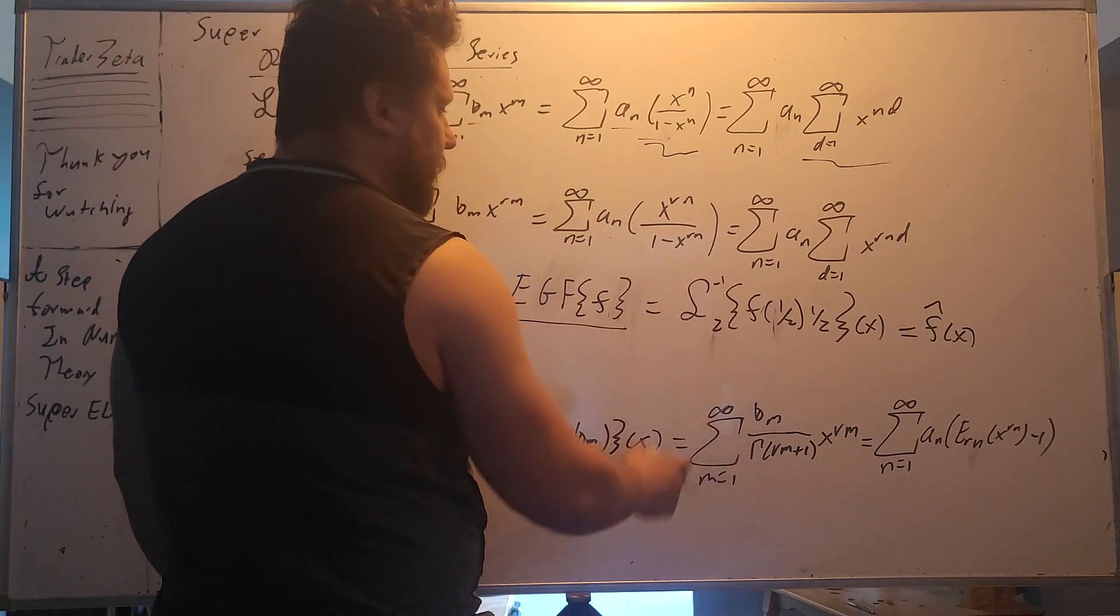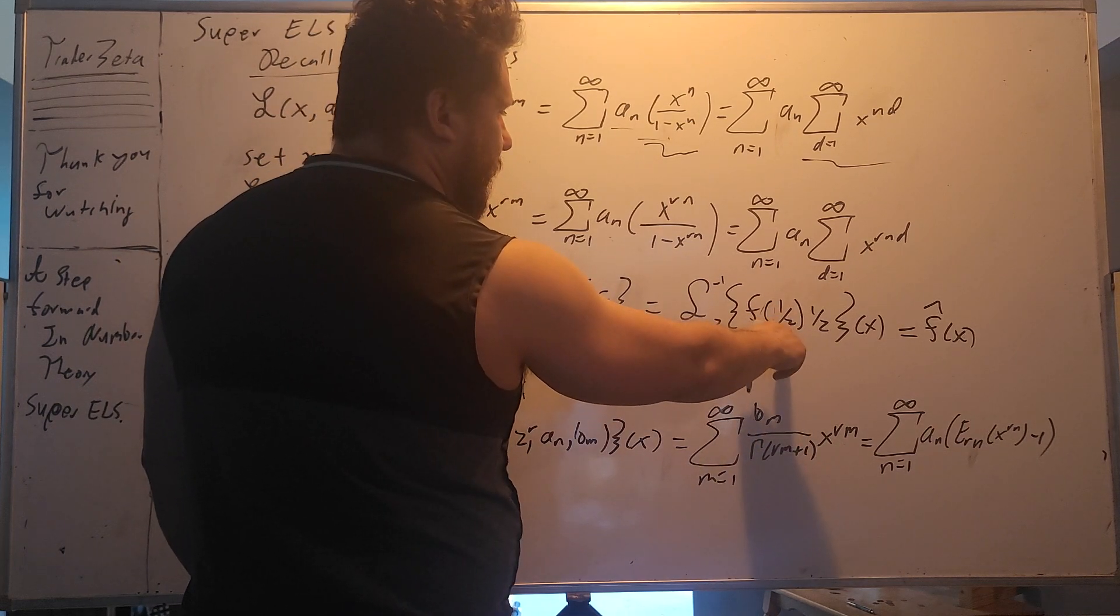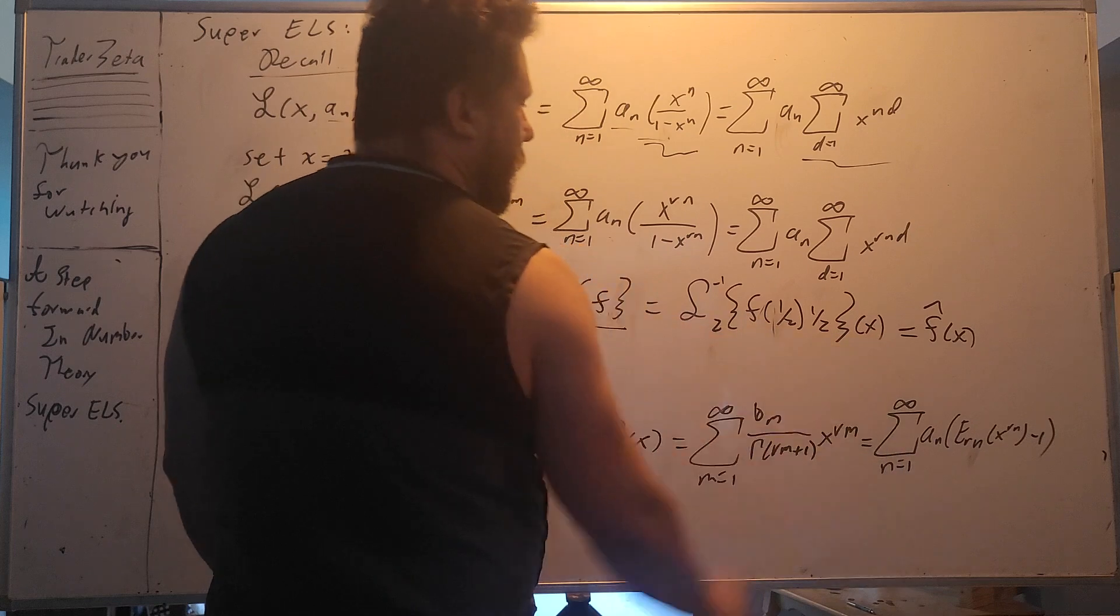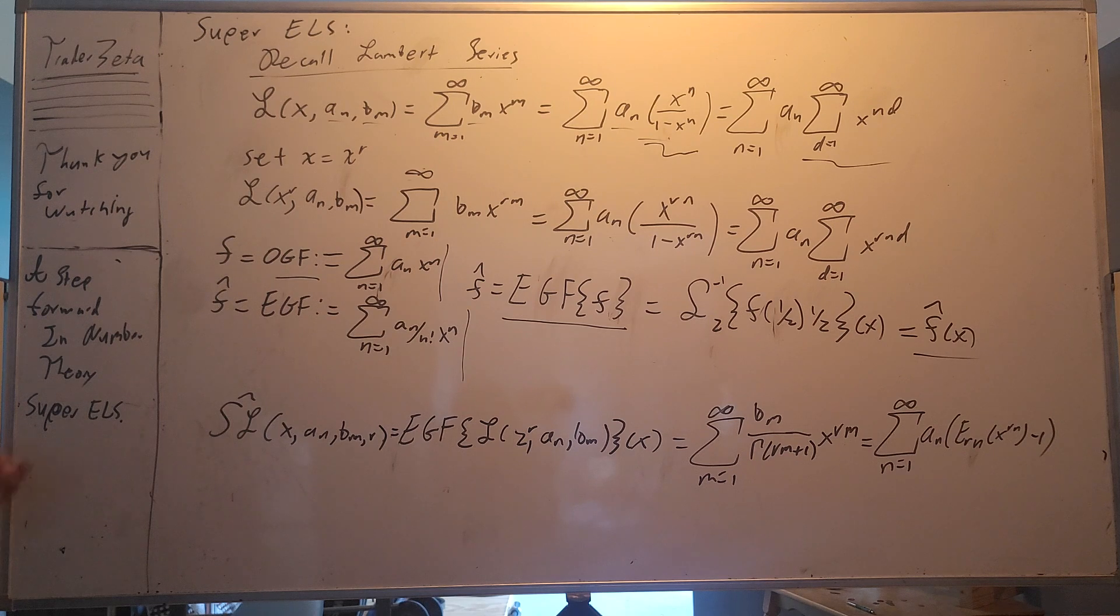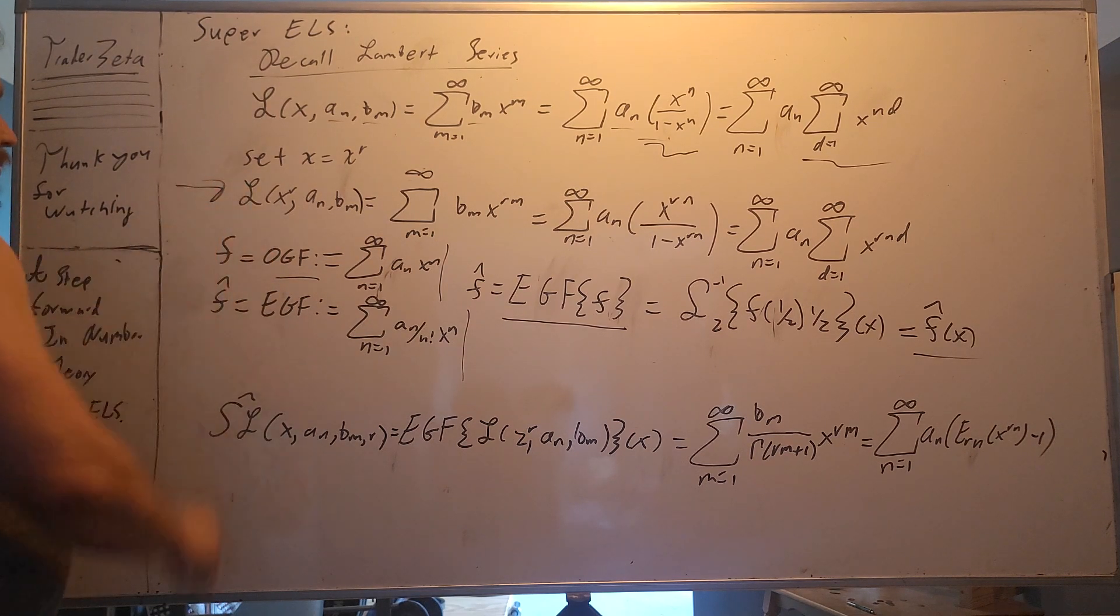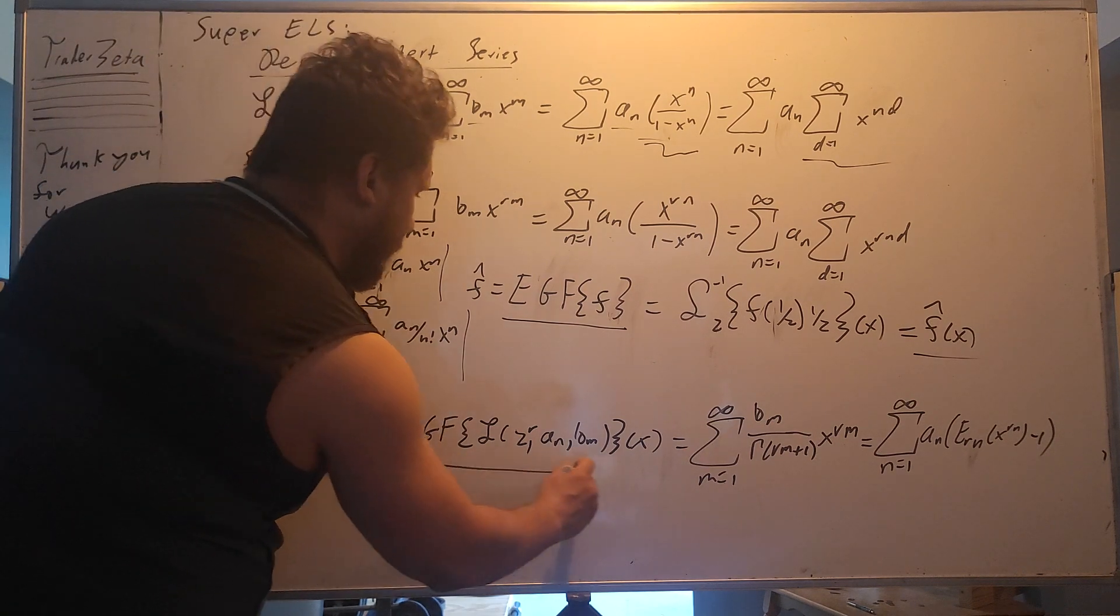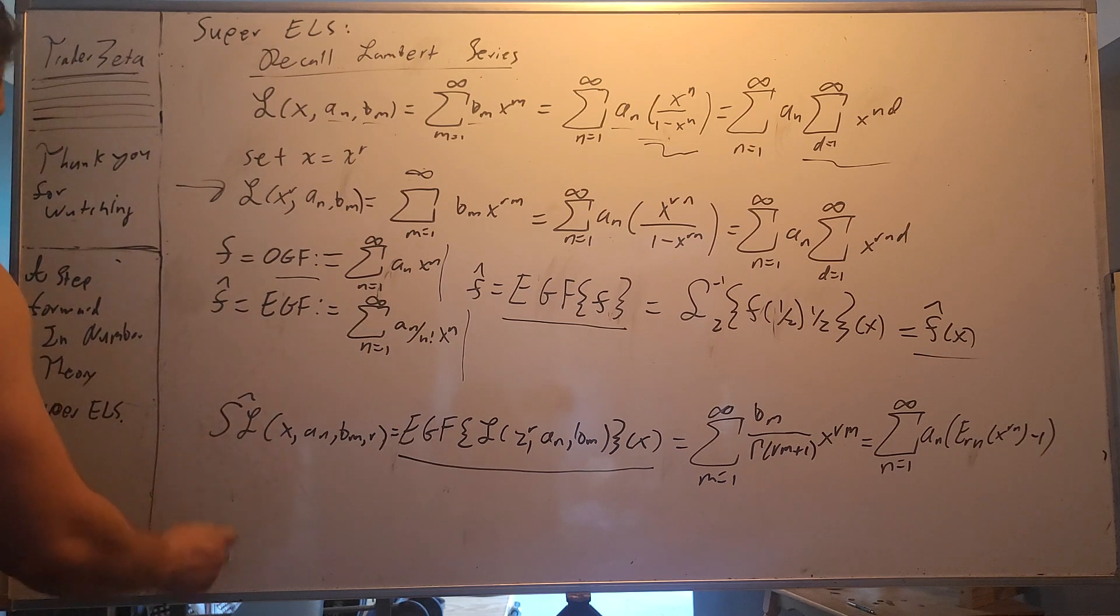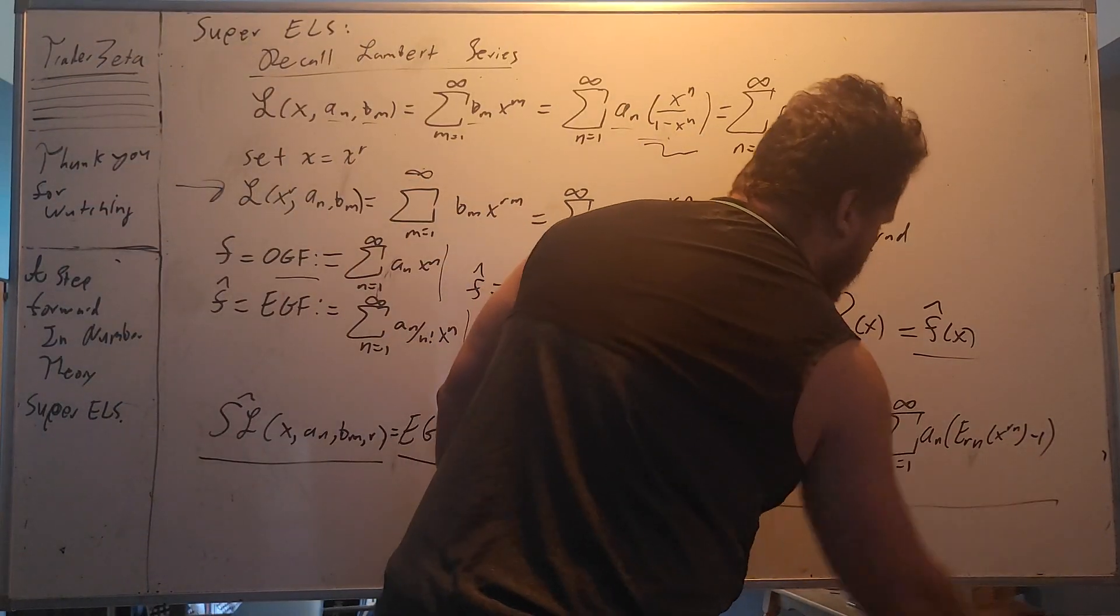So to get back and forth between the two, we're going to define this EGF transform. It is the inverse Laplace transform with respect to z of the OGF evaluated at 1 divided by z times 1 divided by z. We're going to go back to the x world, so we get our EGF in terms of x.